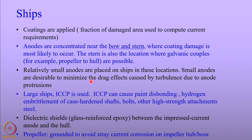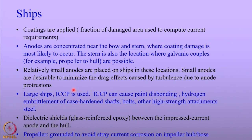Current distribution is very important and small anodes are distributed so that the current is uniformly distributed. One more problem at these locations is the drag associated with the anodes — the larger the anode, the more the drag — so small anodes are distributed to reduce drag on the ships. As ship sizes become larger, using simply the sacrificial anode cathodic protection system becomes unviable, so ICCP is used. In fact, ICCP and sacrificial anode cathodic protection are used together in most ships.